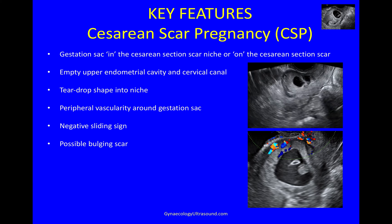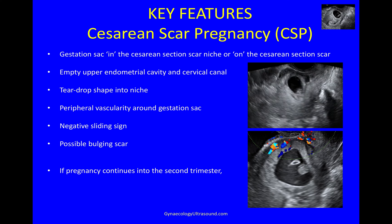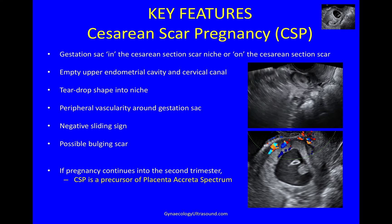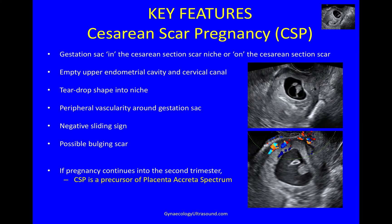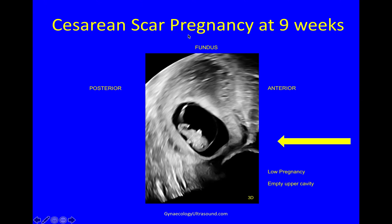Sometimes you see bulging and that is an important thing to look out for. 3D can be useful here because if the pregnancy continues into the second trimester, a scar pregnancy is a precursor of placenta accreta spectrum. On 3D you can see the fundus at the top, the anterior wall, and the pregnancy embedded low in the uterus with the upper cavity empty and the lower section bulging slightly. You can also see the placenta embedded in the scar and a very eccentric insertion of the umbilical cord.